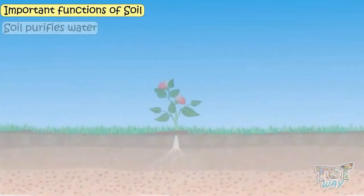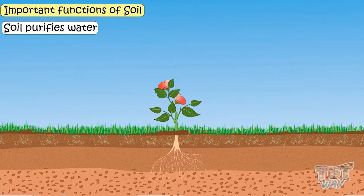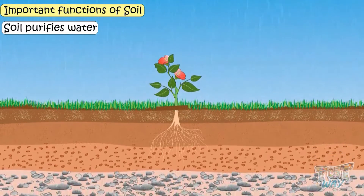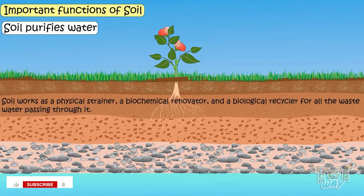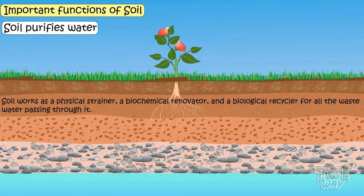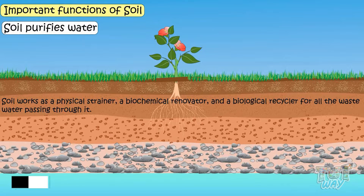Soil purifies water. When rainwater passes through the different layers of soil, it filters out and purifies the water. Soil works as a physical strainer, a biochemical renovator, and a biological recycler for all wastewater passing through it.